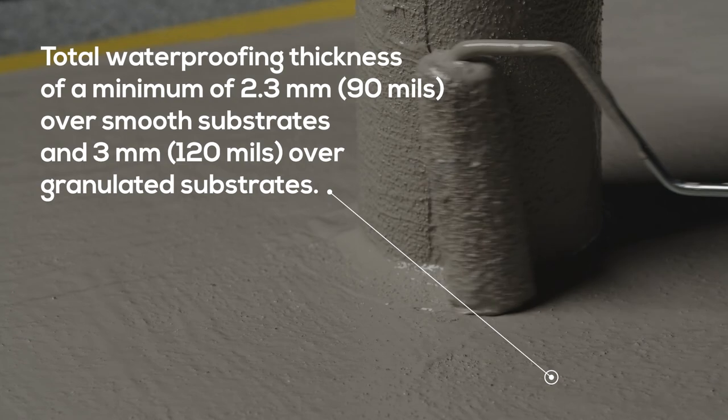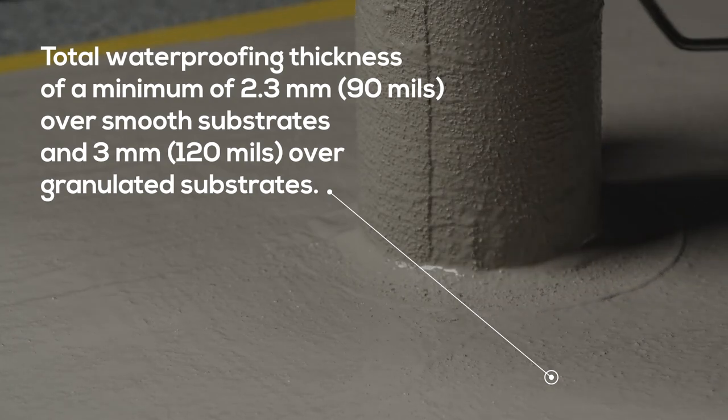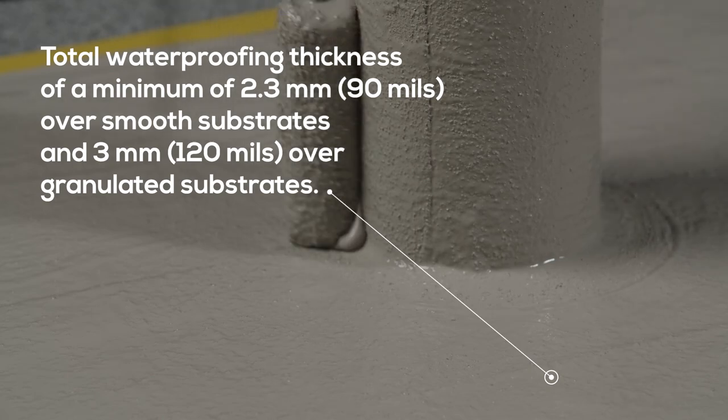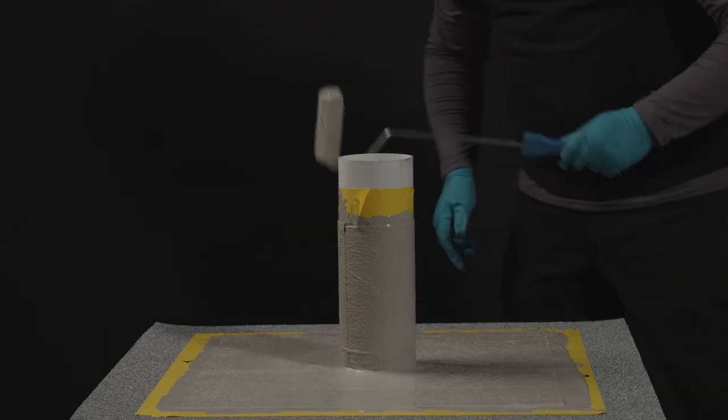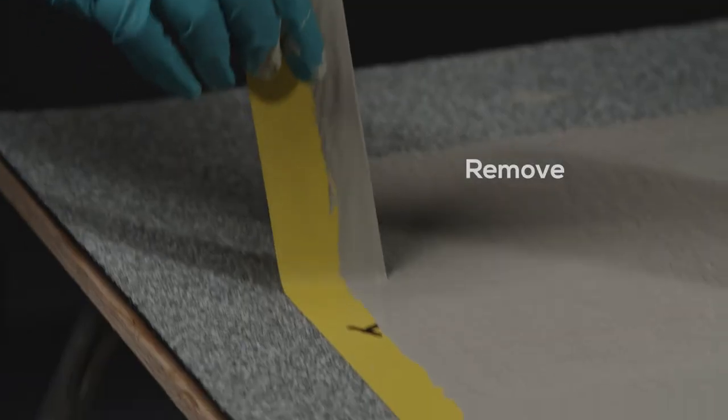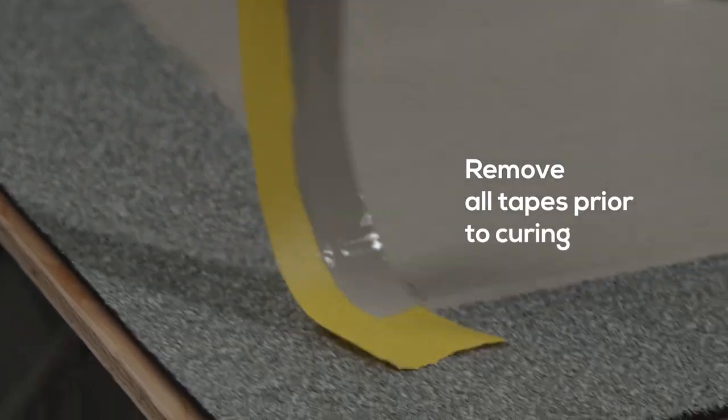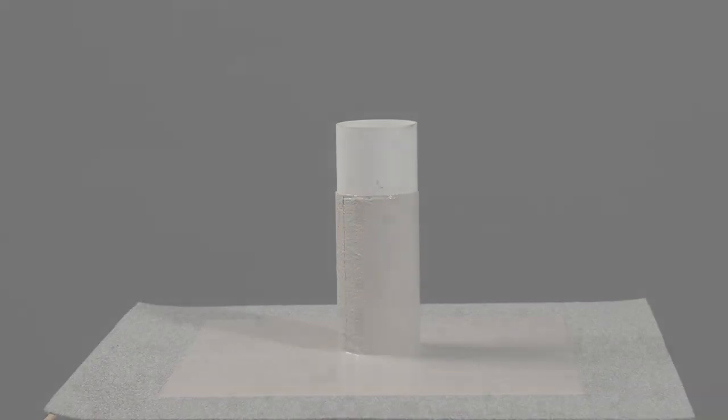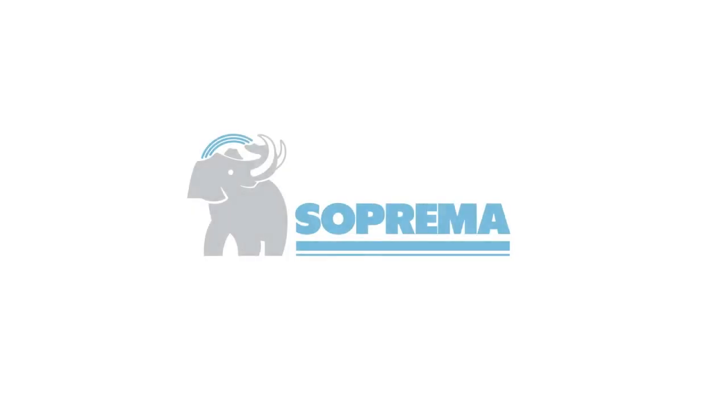Check to ensure the substrate is fully saturated and complete, then remove the masking tape while the resin is wet. This installation is now complete. For more information, consult our technical documentation at Suprema.ca.